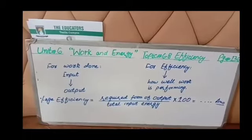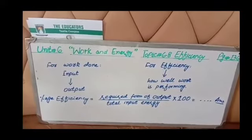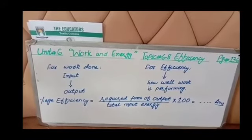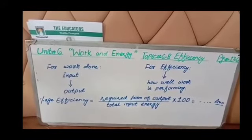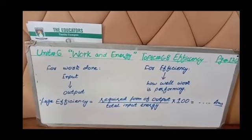For finding the percentage efficiency, we multiply the resultant ratio by 100, and that will give us the percentage efficiency.